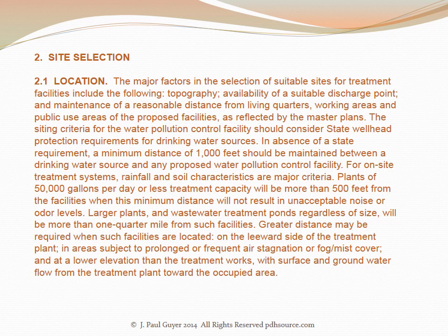With regard to site location, the major factors in the selection of suitable sites for treatment facilities include the following: topography, availability of a suitable discharge point, and maintenance of reasonable distance from living quarters, working areas, and public use areas as reflected by the master plans. The siting criteria for the water pollution control facility should consider state wellhead protection requirements for drinking water sources. In the absence of a state requirement, a minimum distance of 1,000 feet should be maintained between a drinking water source and any proposed water pollution control facility. For on-site treatment systems, rainfall and soil characteristics are major criteria.